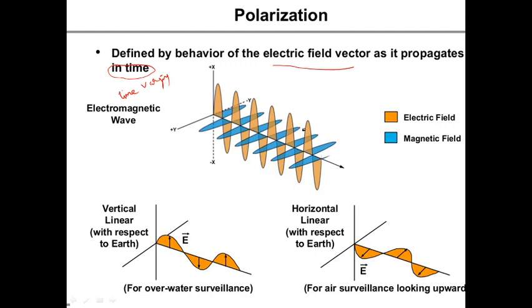This diagram relates to the propagation of electromagnetic waves in free space. Here, we have marked two colors: one shows the motion of the magnetic field component, and this position shows the electric field component. This is always the direction of propagation of the wave. You can observe a simple point: the direction of propagation, the magnetic component, and the electric component are always mutually perpendicular to each other. An example is given here for vertical and horizontal polarization components.